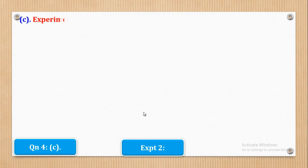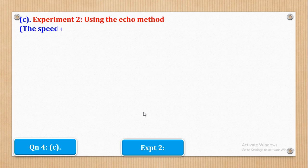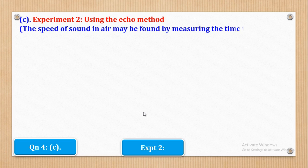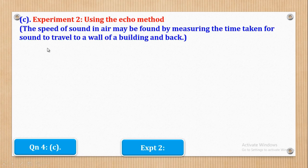Now let's see the second experiment that can be used — the echo method. In this method, you have to remember that the speed of sound in air can be found by measuring the time taken for sound to travel to a wall of a building and back. This is the principle on which this method is based.